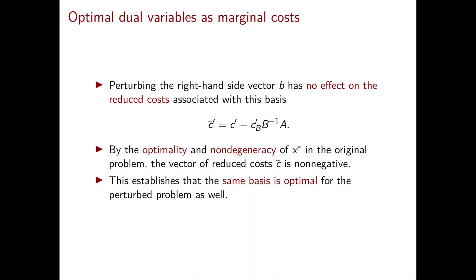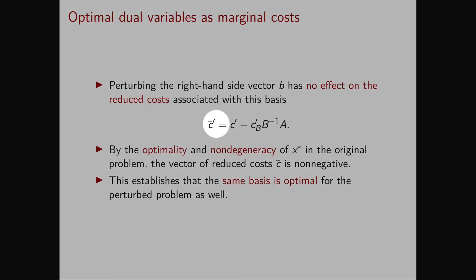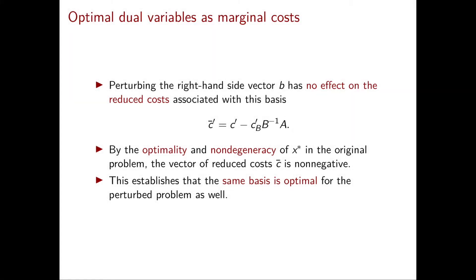Next, we want to show that this basis is also still optimal for the perturbed problem. To prove that, we need to look at the reduced costs associated with the basis. The formula for the reduced costs is always the same, C transpose minus CB transpose B inverse A. Note that this formula is completely independent on the right-hand side of our equality constraints.